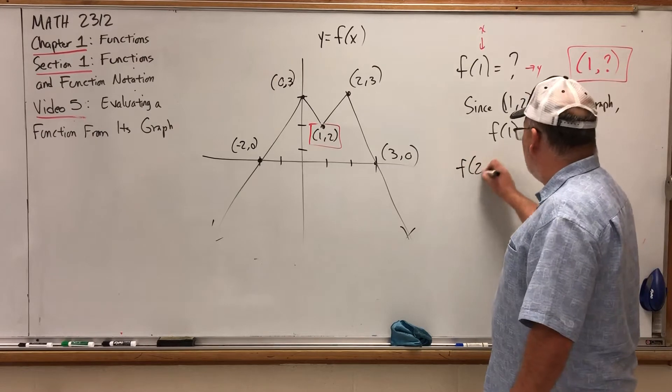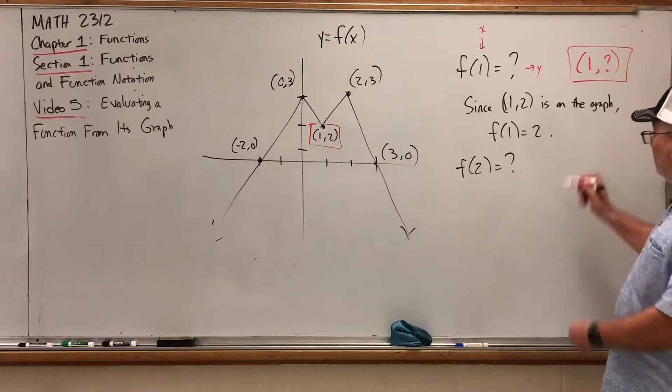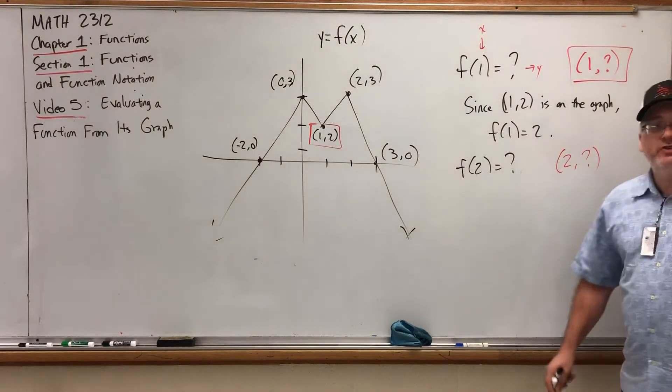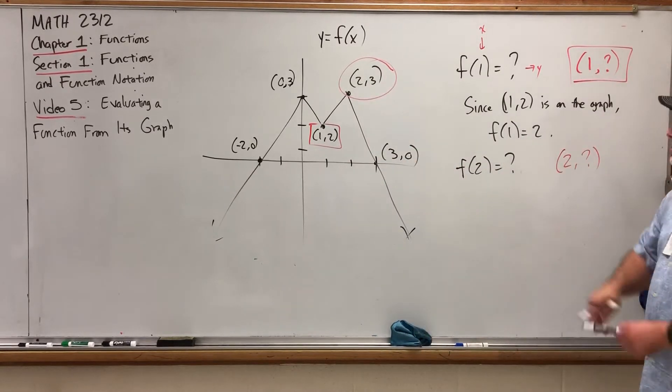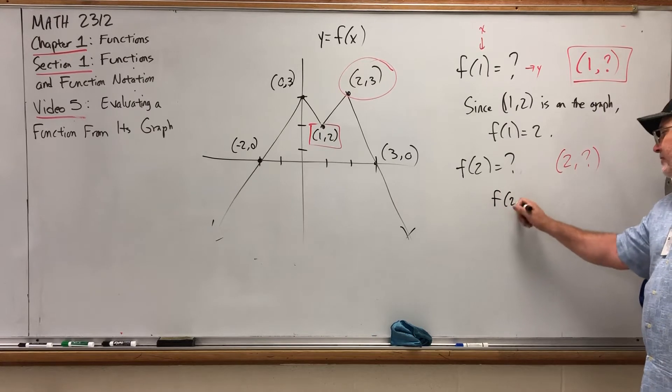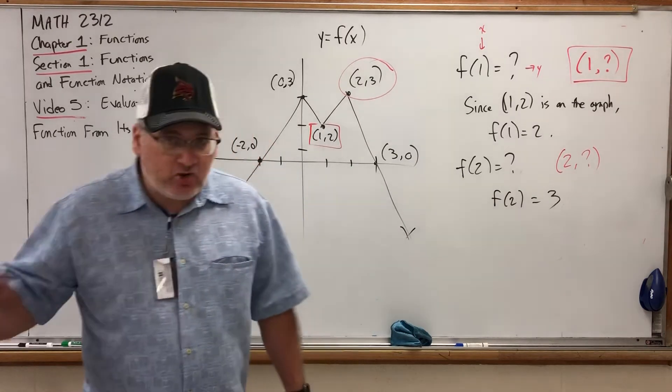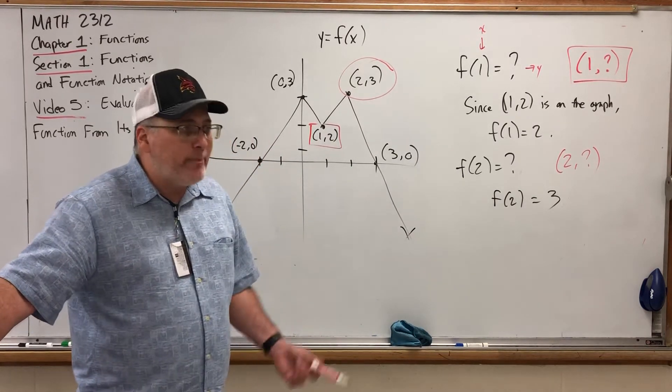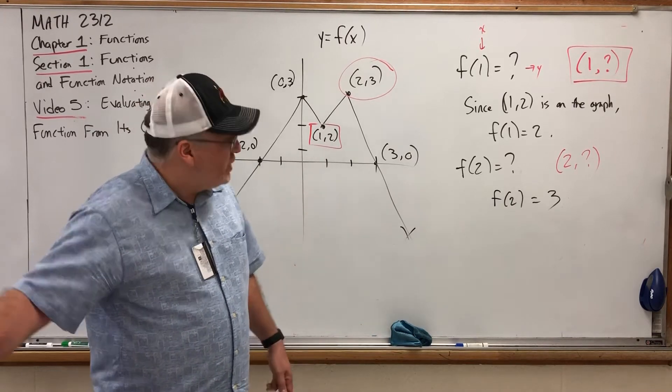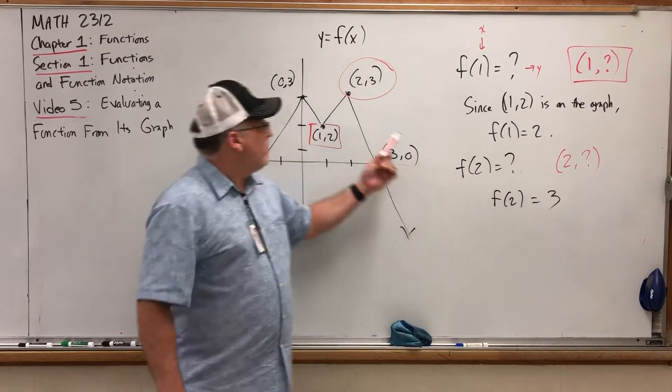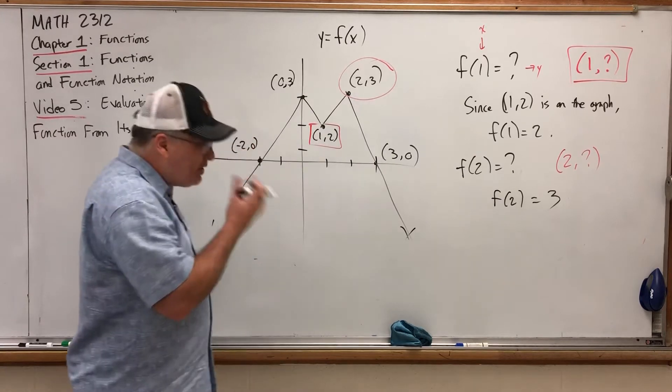And I can do it for any of these. I can ask you, what is f of 2? Well, I'm asking you which ordered pair has an x of 2. Go find its y. Here it is. Because the point 2 comma 3 is on the graph, we know that f of 2 is equal to 3. So, we can actually evaluate a function based on its graph alone by knowing that each ordered pair represents an input paired with its output. By asking us to evaluate a function, we're being told what input to look for. We find the point with the correct input. The y-coordinate is its output.